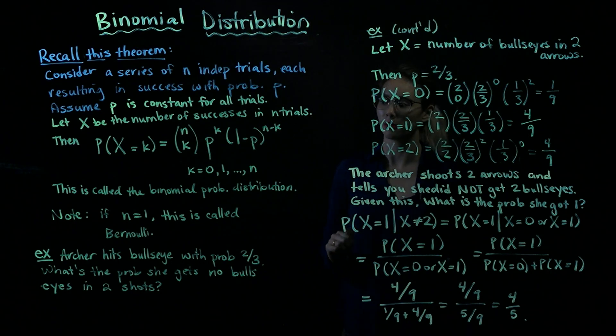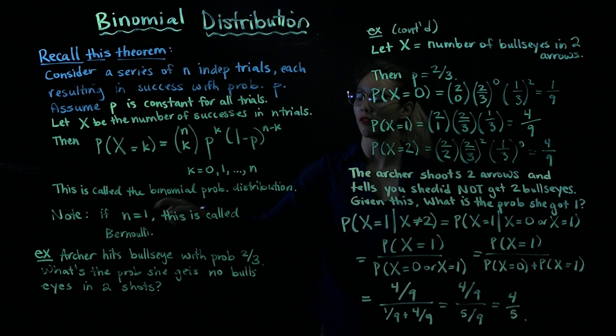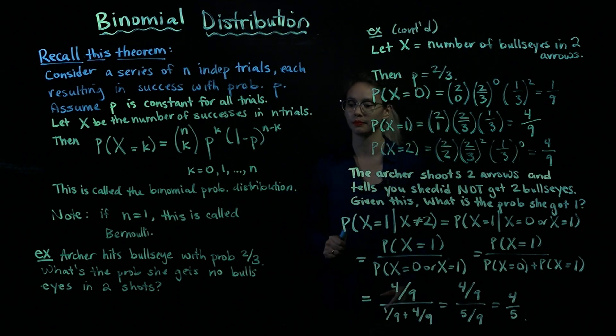So this is called the binomial probability distribution. And in the special case that we just have one trial, this is called the Bernoulli distribution. All right, so let's use this to calculate some probabilities.